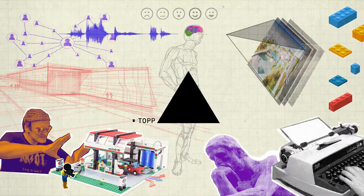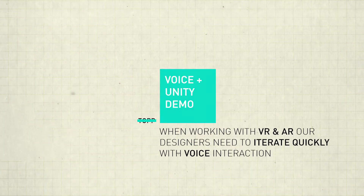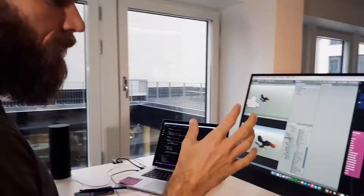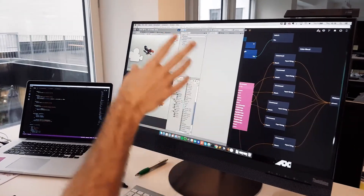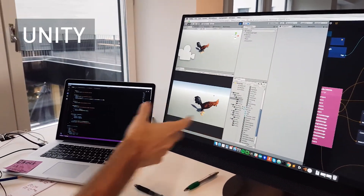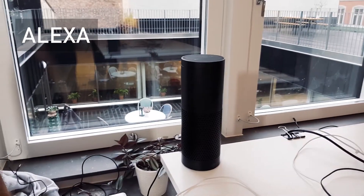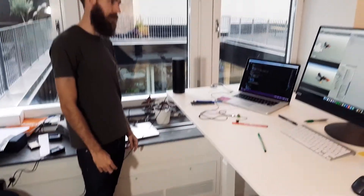Hello! Today we're going to check out a voice demo that we've done. It's got voice and 3D and it's pretty silly. In this example we have Noodle, our own prototyping platform, running here. We've got Unity, the 3D engine, and we have Alexa, the smart voice assistant from Amazon.